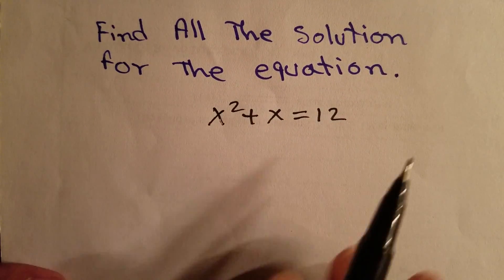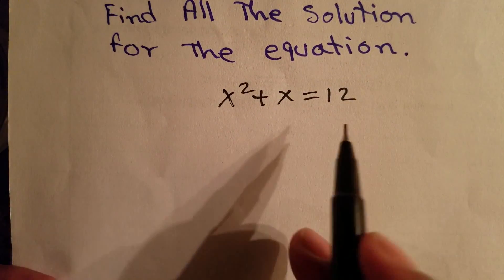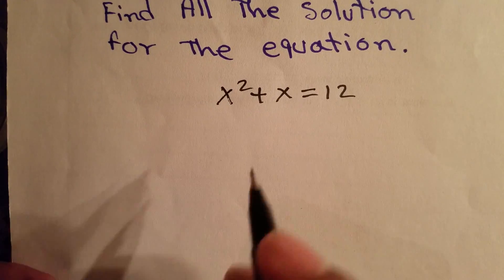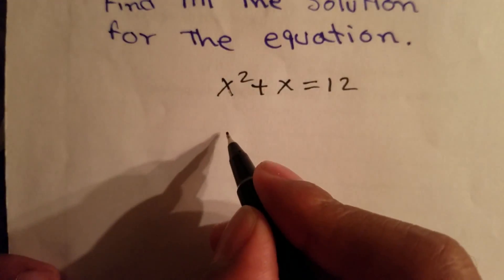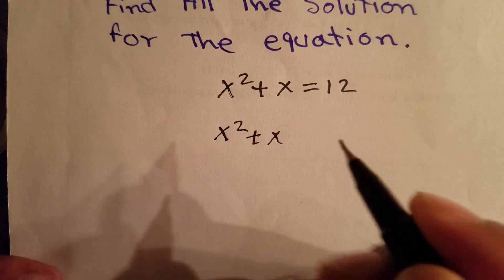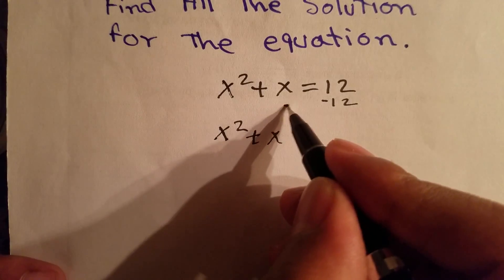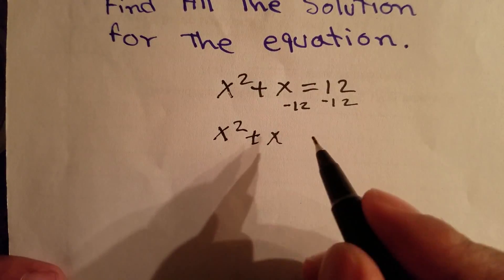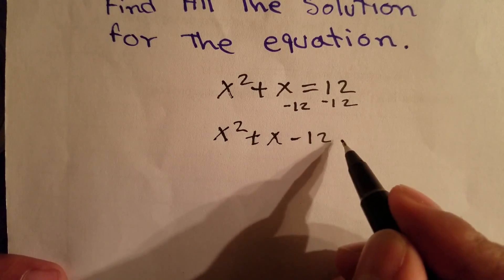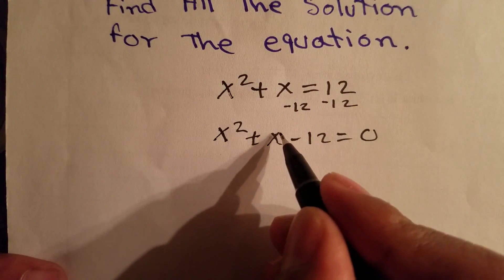First thing we have to do is to take the constant on one side and make the full equation equal zero. So this is going to be x² + x, we subtract 12 on this side so this is going to be zero. And then we have to subtract 12 on this side, so this is going to be -12. So x² + x - 12 = 0.